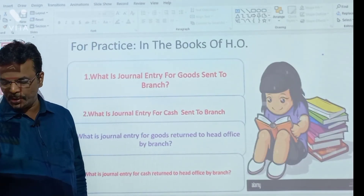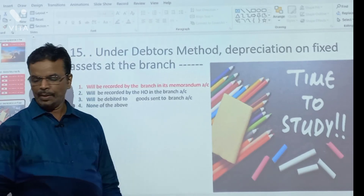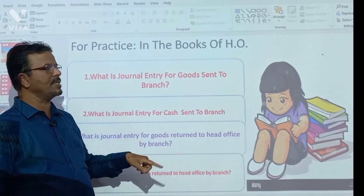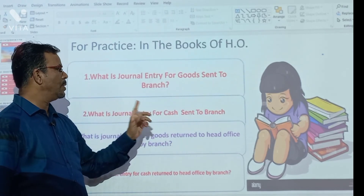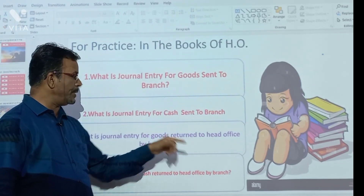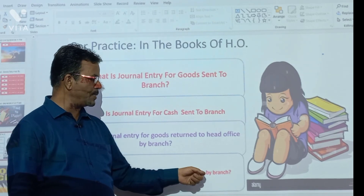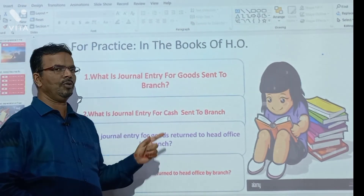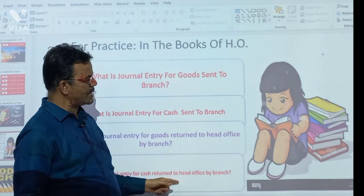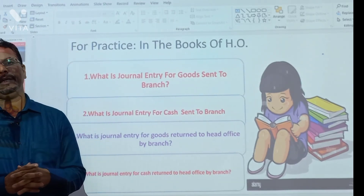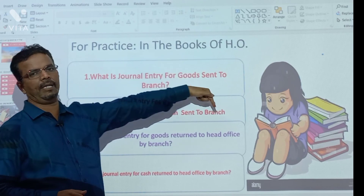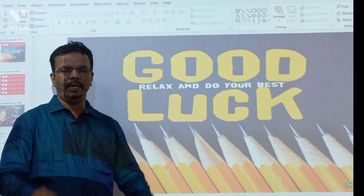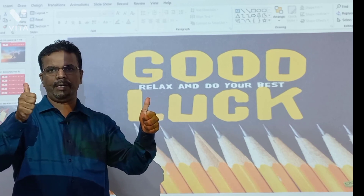All these are very important objectives from an exam point of view. Some questions you may need to pass journal entries for: goods sent to branch, cash sent to branch, return to HO by branch, and return to head office. These can also be asked as objective questions. For the answers, you can refer to my theory video on branch accounting. Thank you for watching. Good luck and all the best for your exam.